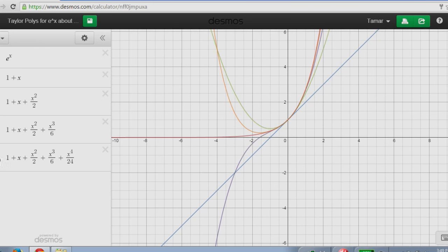So we notice that the higher the degree polynomial, the closer the graph mimics the graph of e to the x, and the further from x equals 0 we can go and be within a certain degree of accuracy.